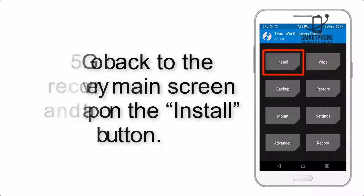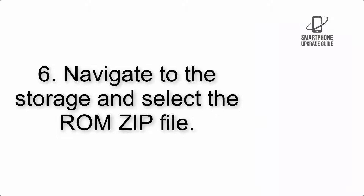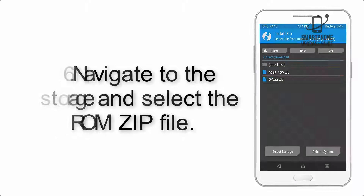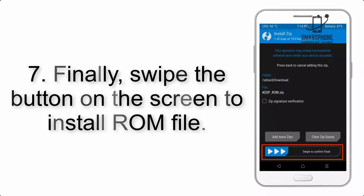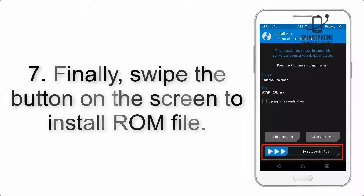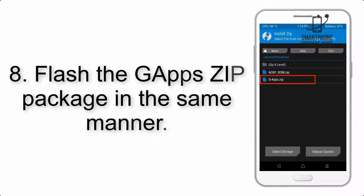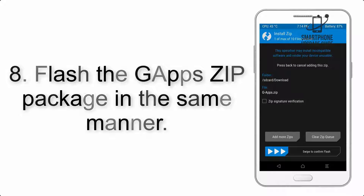Step 5: Go back to the recovery main screen and tap on the Install button. Step 6: Navigate to the storage and select the ROM zip file. Step 7: Finally, swipe the button on the screen to install the ROM file.